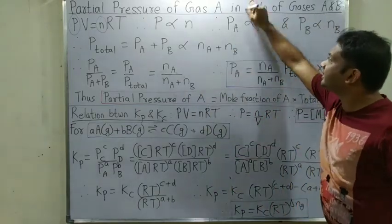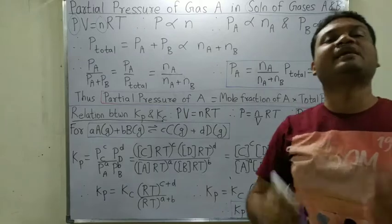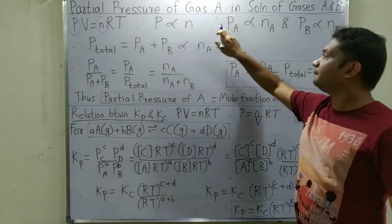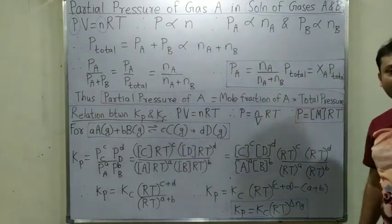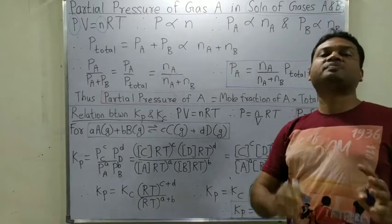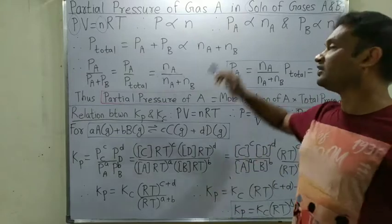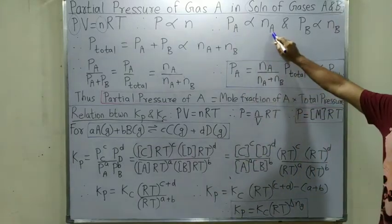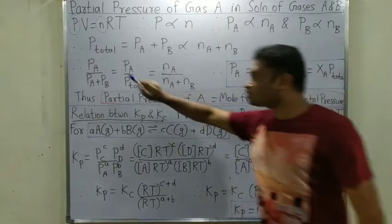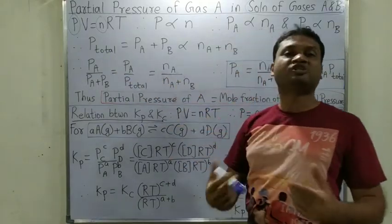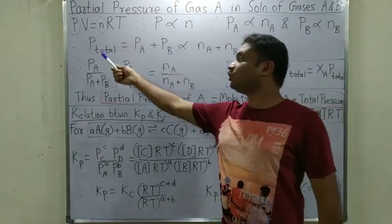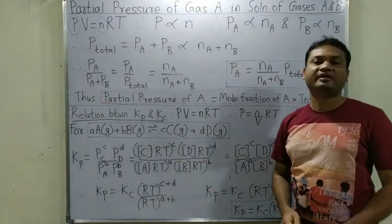We have a solution of gas A and gas B. In this mixture, partial pressure of A is directly proportional to number of moles of A, and partial pressure of B is directly proportional to number of moles of B. Also, total pressure is the sum of partial pressures of the two gases: total pressure equals partial pressure of A plus partial pressure of B.